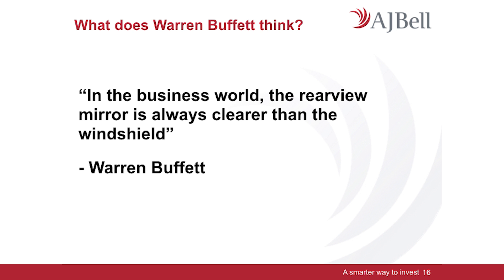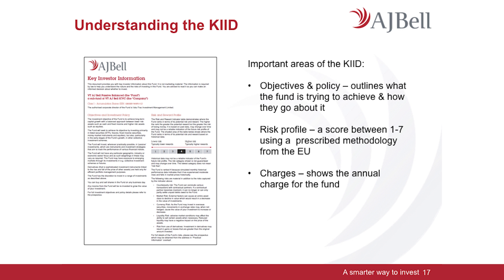Understanding the Key Investor Information Document — the KID — is important. You should read all of these for the funds you're looking at. The crucial information on here is the objective and policy, which outlines what the fund is trying to achieve and how it goes about it. It also helpfully gives you a risk profile scored between one and seven by the EU, with one being lower risk and seven being the highest risk. It also has to show you the charges. These documents are prescribed in how they lay out information, so they're a very good way of comparing different strategies.